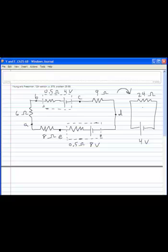So if I have a total resistance of 24 ohms and a net voltage of 4 volts, then I say V equals IR.